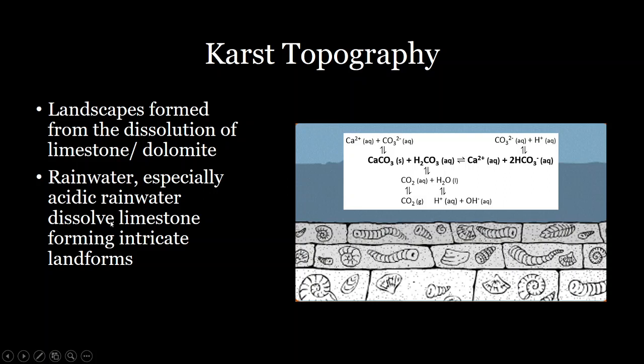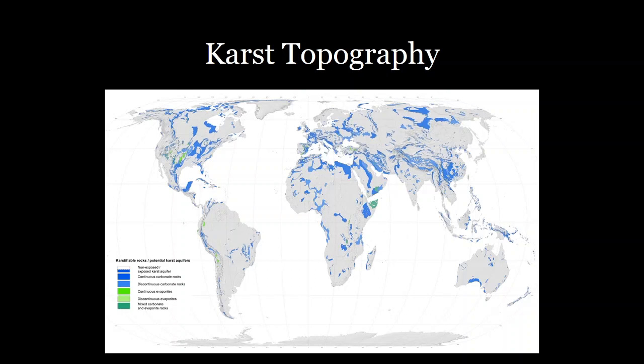When rainwater, and especially acidic rainwater, flows over limestone deposits on land, we can get really intricate landforms such as caves, caverns, and all sorts of features we're going to be talking about. You can see a map here with all the blue areas indicating carbonate rocks. A good portion of the United States, the Yucatan Peninsula, as well as broad swaths of China and Asia also have very large areas with karst topography.